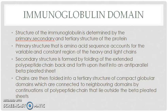The chains are then folded into a tertiary structure of compact globular domains, which are connected to neighboring domains by continuations of the polypeptide chain that lie outside the beta-pleated sheets. So there are three types of structure: primary, secondary, and tertiary.